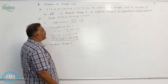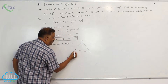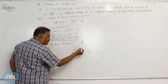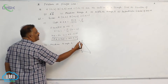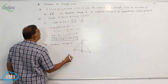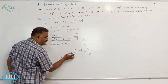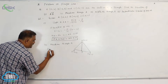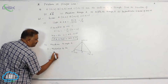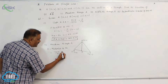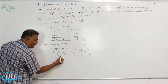To find the median through A, let us draw a diagram. We have vertices A(10, 4), B(-4, 9), and C(-2, -1). The median is the line joining a vertex to the midpoint of the opposite side. So point D is the midpoint of BC. D = midpoint of BC = ((-4 + (-2))/2, (9 + (-1))/2) = (-6/2, 8/2) = (-3, 4).